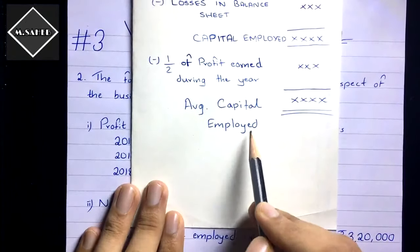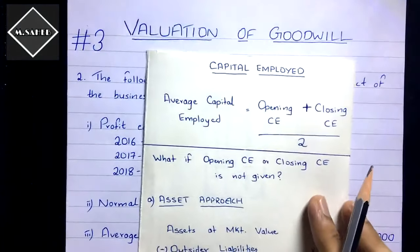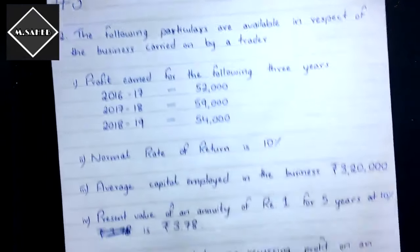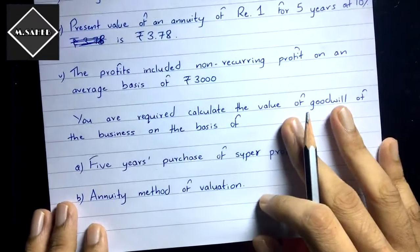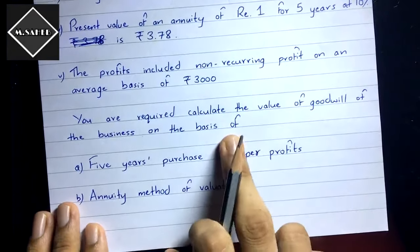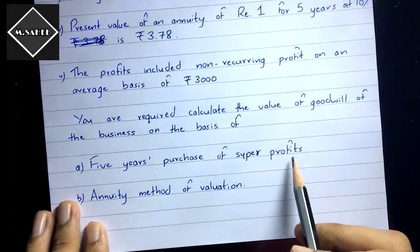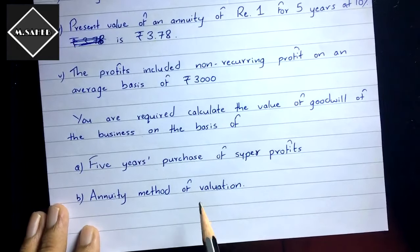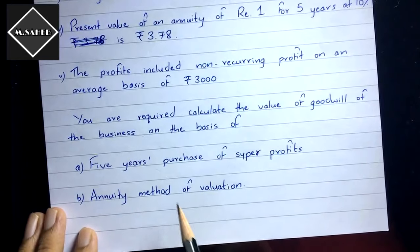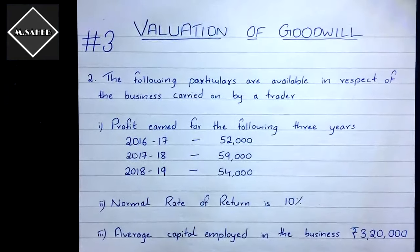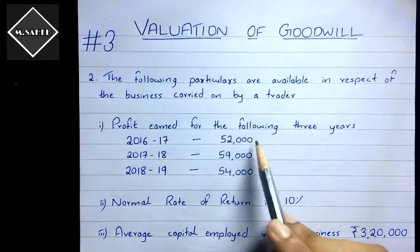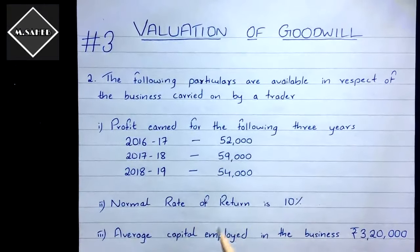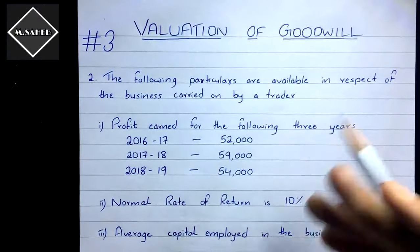Now let's solve the problem. The question requires us to calculate the value of goodwill on the basis of five years purchase of super profits, and also on the basis of the annuity method. The profits given are: 2016–17: ₹52,000; 2017–18: ₹59,000; 2018–19: ₹54,000.